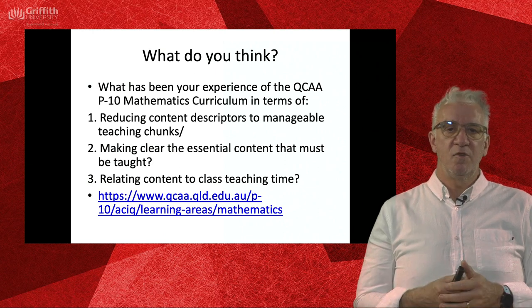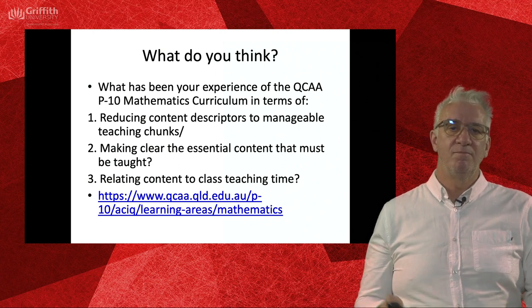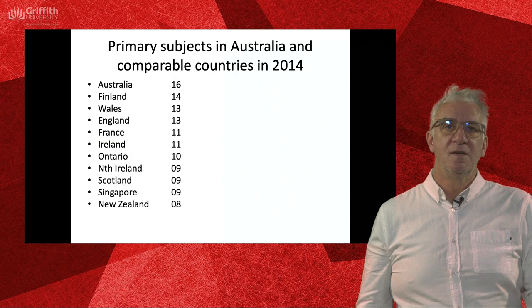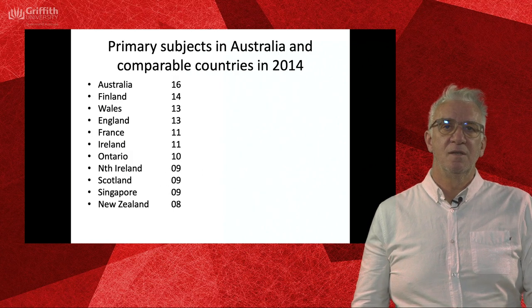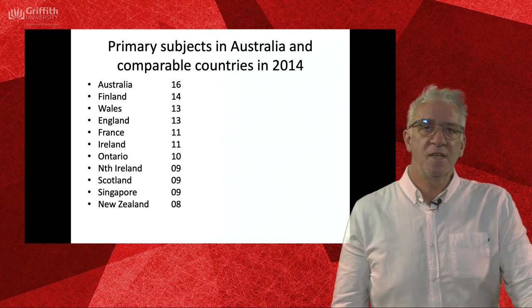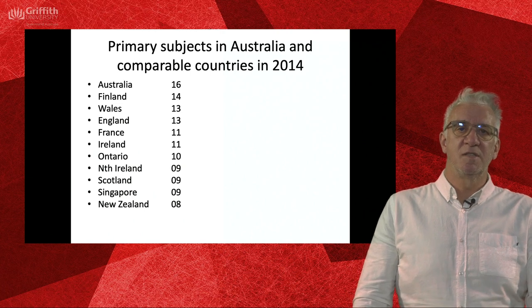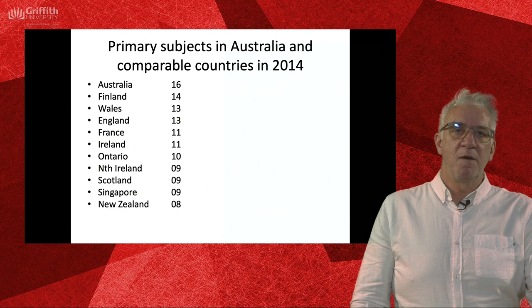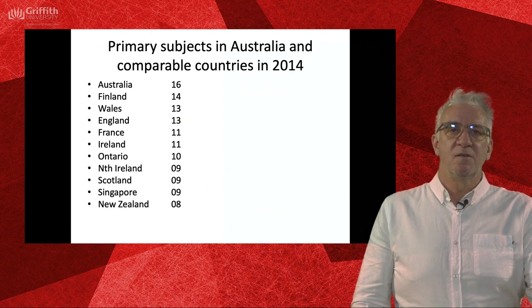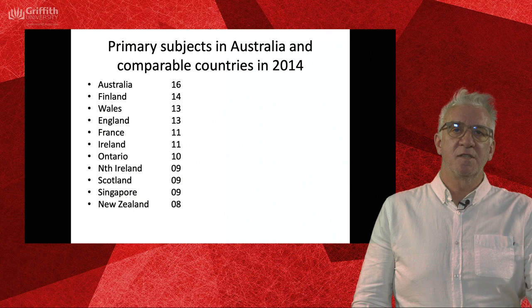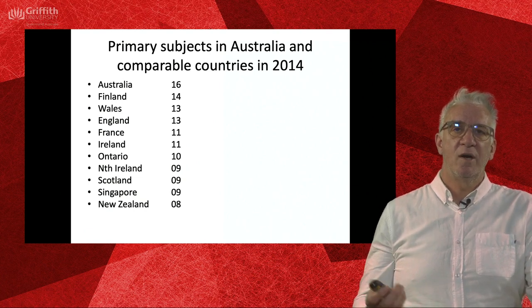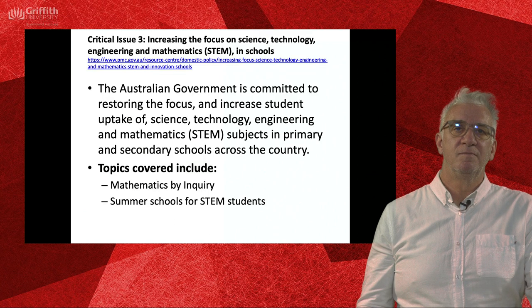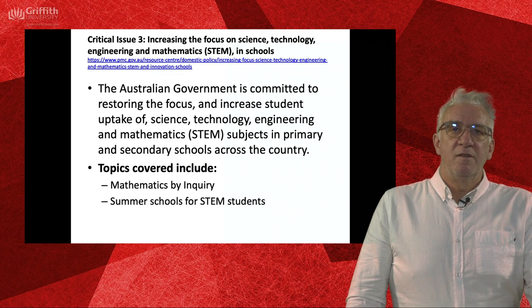Here are some numbers about how Australia compares in terms of the number of subjects to cover — not just mathematics. In Australia we have 16 subjects, but you can see that in other countries they have fewer. So our curriculum tends to get a bit crowded.